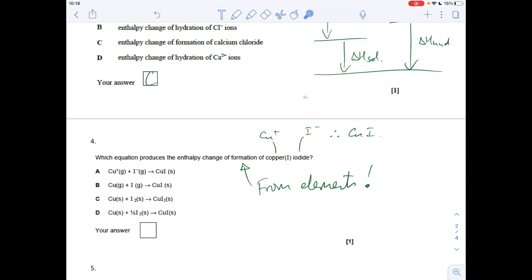Question four. Which equation is for the enthalpy change of formation of copper(I) iodide? So there's the ions in the compound - copper 1+ from that Roman one there, I minus. So the formula is CuI. So that gives us those as options. And then a reminder that it's got to be from elements. So the answer was D.